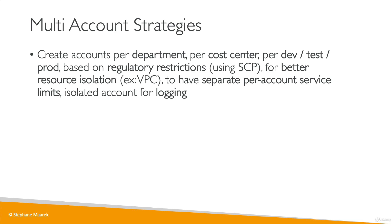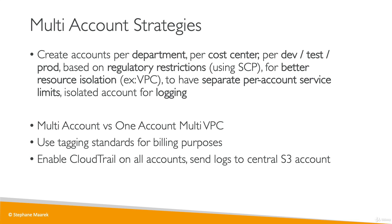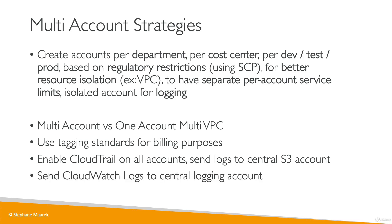All these could be multi-account strategies — it's really up to each organization to choose. You have two options: multi-account or one account with multiple VPCs, which is a trade-off. You can use tagging standards across all accounts for billing purposes. You should enable CloudTrail on all accounts and send logs to a central S3 account. Similarly, CloudWatch logs should be sent to a central logging account.